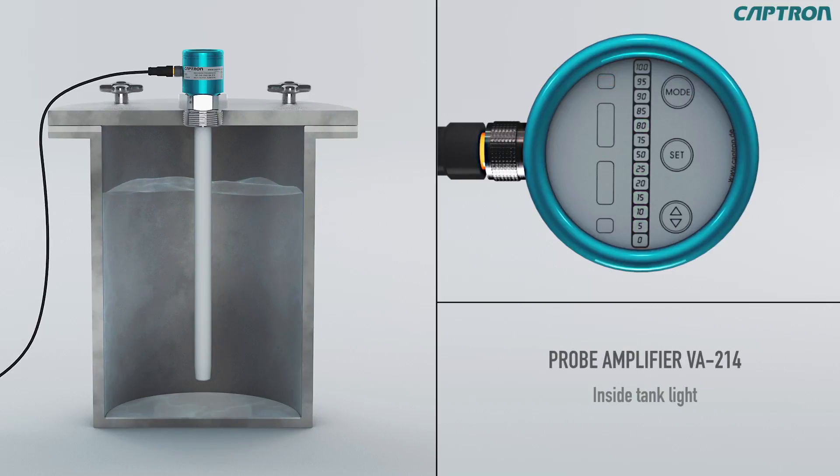Optionally, there is lighting available for the inside of the tank of the probe amplifier VA214. To turn on the LEDs, just touch the set button in measuring mode. The light shuts off automatically after 15 seconds to avoid overheating, and can be turned on again after waiting 5 seconds.